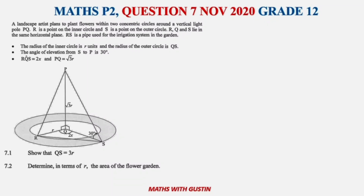Welcome back ladies and gentlemen to the last video of this series of question sevens. Today let's have a look at the November 2020 Grade 12 Maths Paper 2. It was an analytical geometry question involving circles, the cosine rule, area, and also a little bit of a formula with volumes and shapes as well.